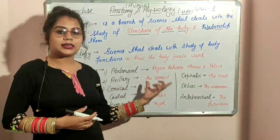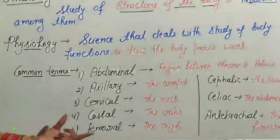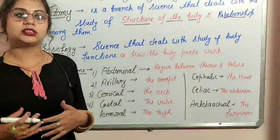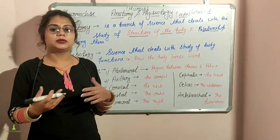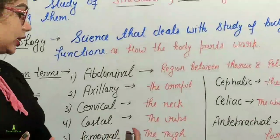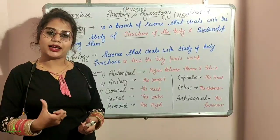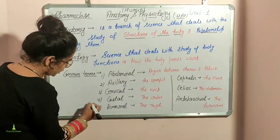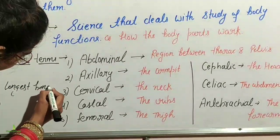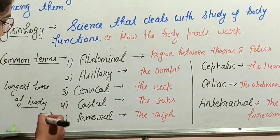Next is the cervical region — we have all heard of cervical pain. Next is the costal region, which refers to the ribs area; we call it the intercostal region. Then the femoral region — the femoral refers to the thigh. The femur is the thigh bone and is the longest bone of the body.